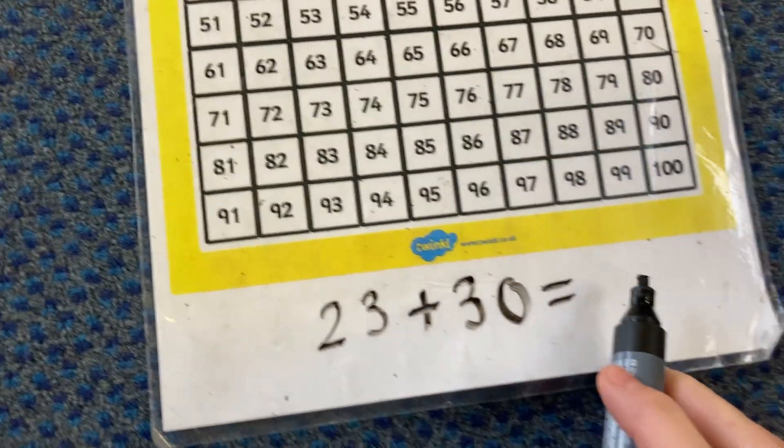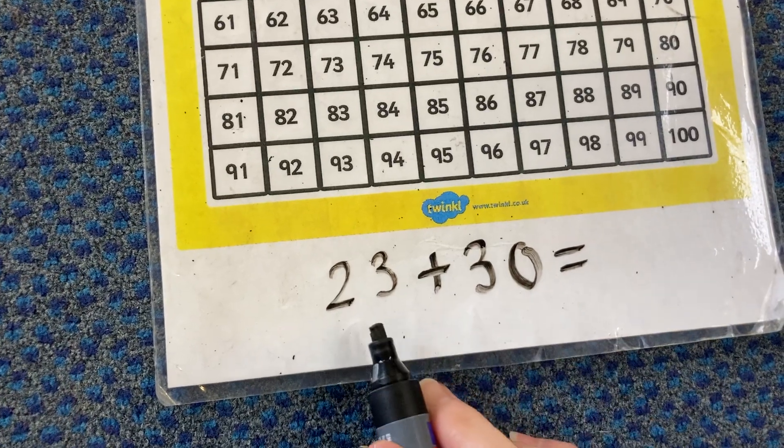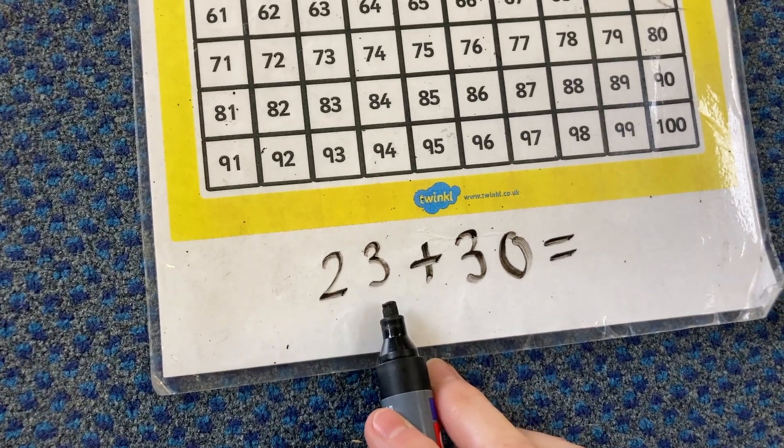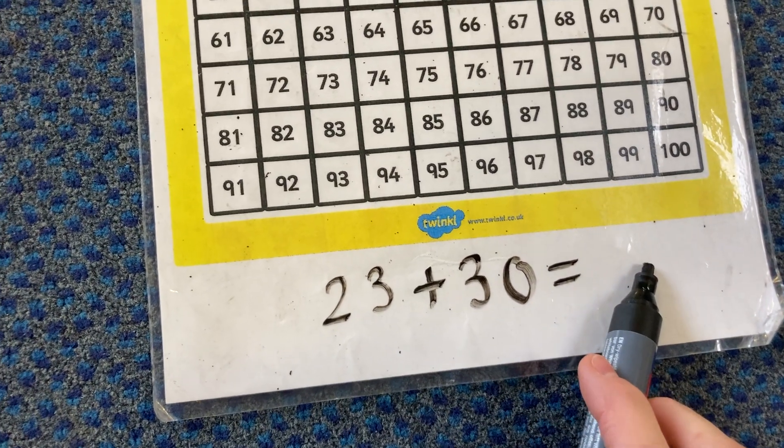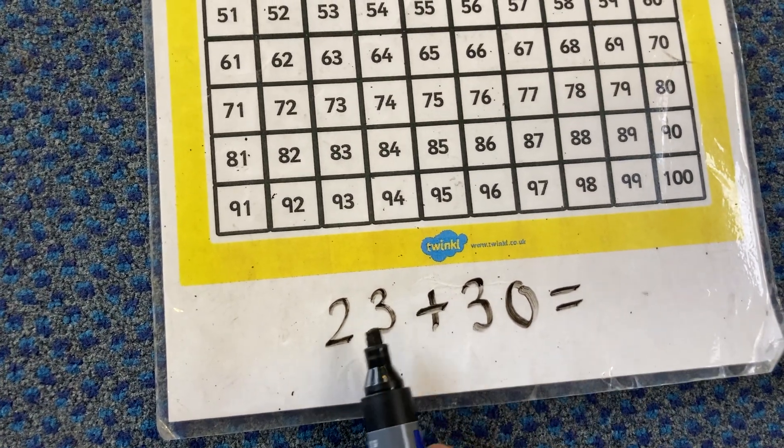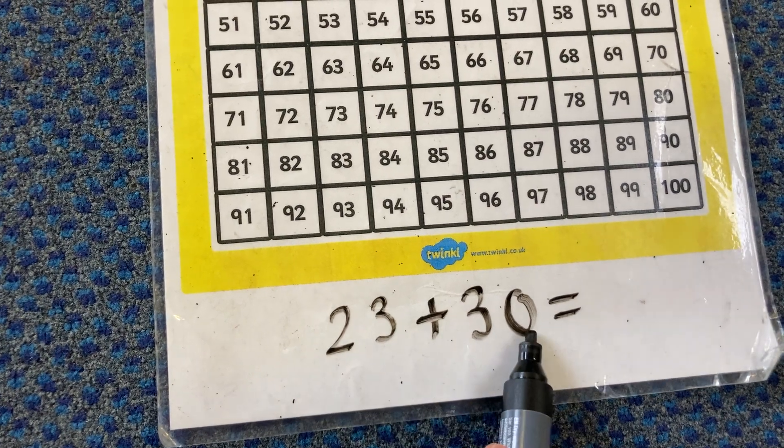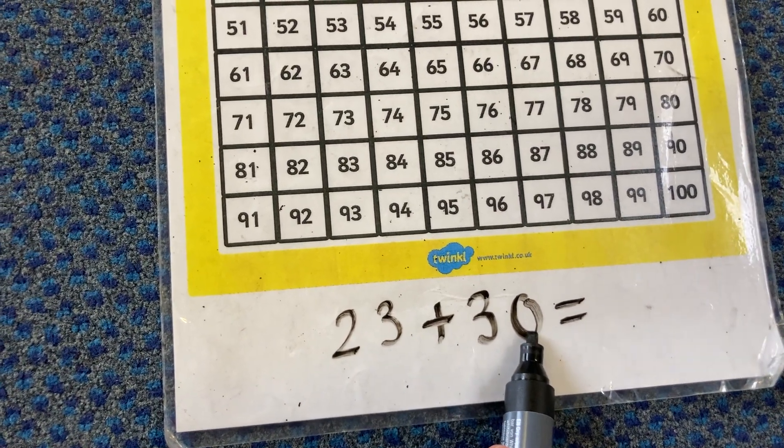For my answer, I would expect that because the ones is the thing that stays the same and it's the tens that changes, I would expect that my ones in my answer is going to be a 3. Because look, I'm not adding anything in the ones.